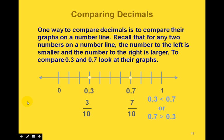Now we can also compare decimals. One way is to compare their graphs on a number line — the number on the left is smaller and the number on the right is larger. For example, comparing three-tenths and seven-tenths: on a number line from zero to one split into ten equal parts, three-tenths is to the left of seven-tenths, so three-tenths is less than seven-tenths, or equivalently, seven-tenths is greater than three-tenths.